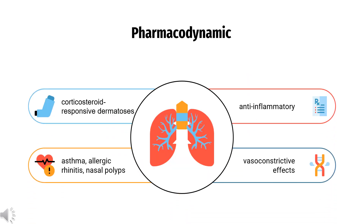Pharmacodynamics: Beclomethasone dipropionate works by attenuating the inflammatory responses associated with asthma, allergic rhinitis, nasal polyps, and corticosteroid-responsive dermatosis. It suppresses the actions of inflammatory cells such as mast cells, eosinophils, basophils, lymphocytes, macrophages, and neutrophils. It also inhibits the release of inflammatory mediators such as histamine, eicosanoids, leukotrienes, and cytokines.